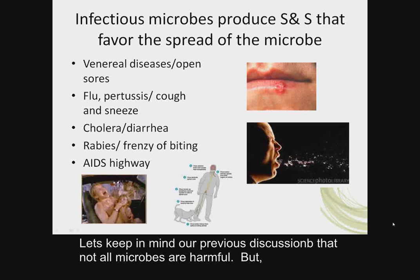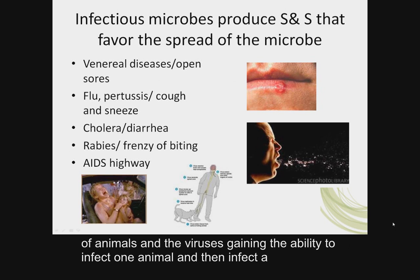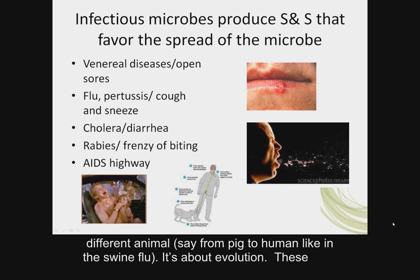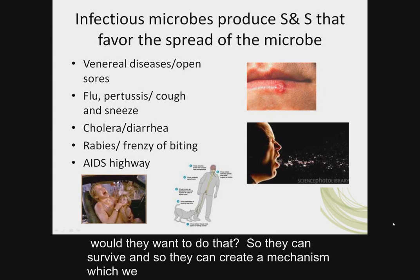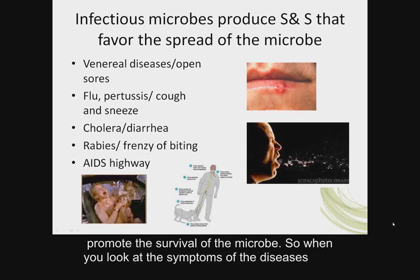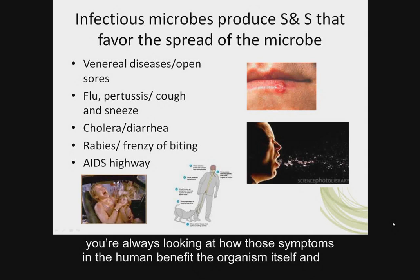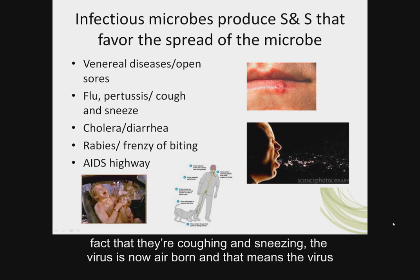Not all microbes are harmful, but let's talk about what makes them harmful — especially considering domestication of animals and viruses gaining the ability to infect one animal and then a different animal, like pig to human in the swine flu. It's about evolution. These microbes evolve to cause conditions harmful to humans so they can survive. Signs and symptoms are really mechanisms that promote the survival of the microbe. Sneezing and coughing make the virus airborne so it can spread. Open wounds with venereal diseases, cholera with diarrhea, and rabies causing the frenzy of biting are all examples of how the microbe must be shed from one organism to infect another.